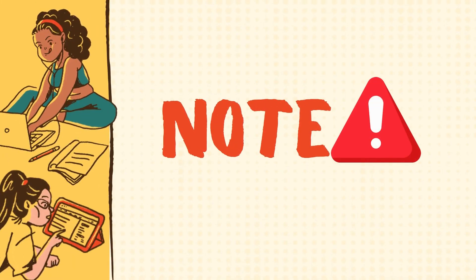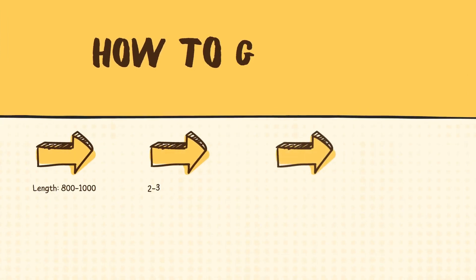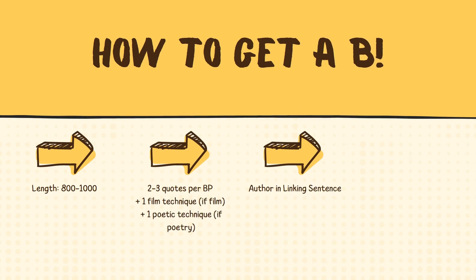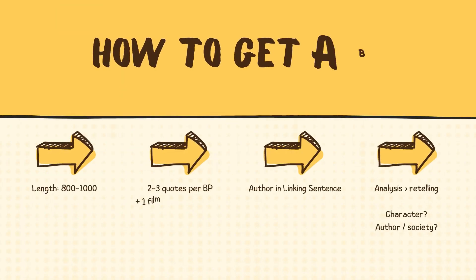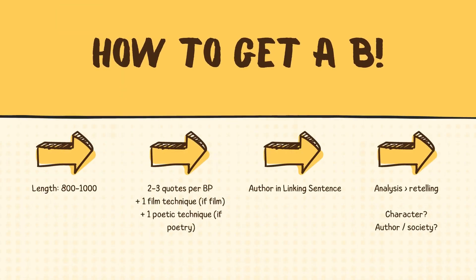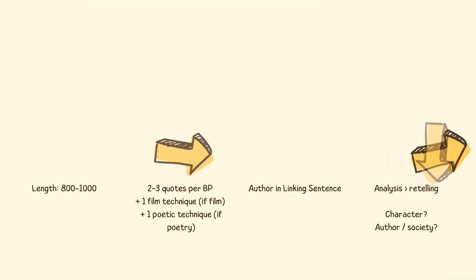For these quotes to count, you actually have to analyze them. Just quoting words from the text without further reference to them doesn't add to your piece. Thirdly, reference the author and their intent when writing in the linking sentence. As a bonus, you can also put author intent in the topic sentence — this gives you bonus analysis points. And finally, make sure you are analyzing the text rather than retelling it. Don't bother explaining the context of the examples you're using. If a sentence doesn't answer one of the following questions, it's not analysis.